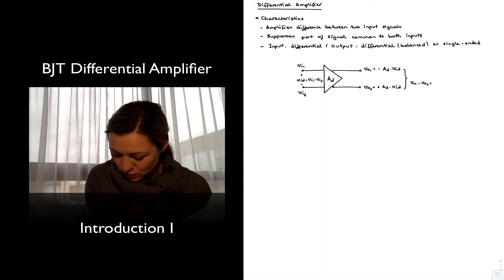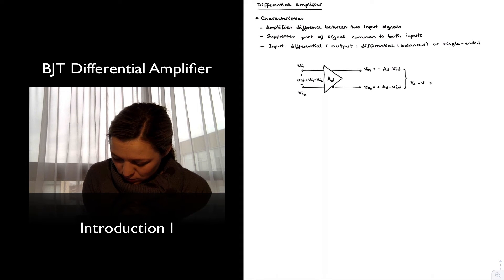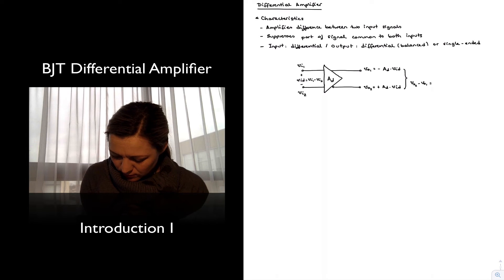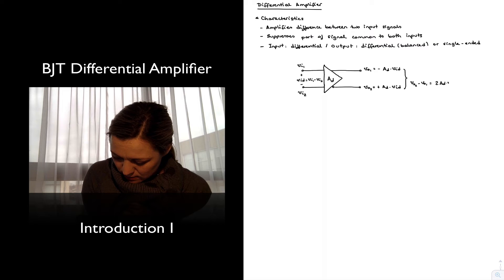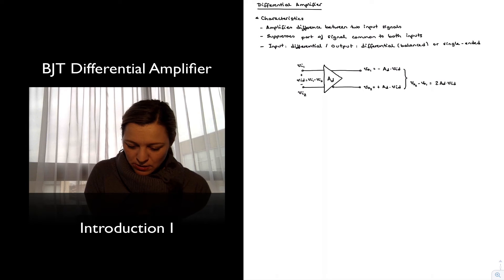Just to get a positive value at the output, taking the output in the appropriate direction, VOUT2 minus VOUT1 is going to be 2·AD times VID.